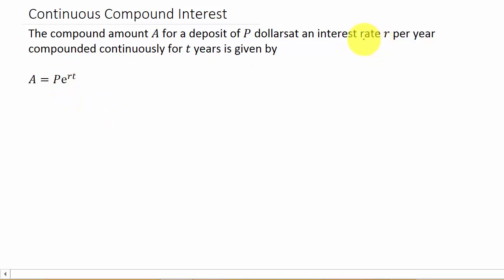R, that's your interest rate per year, and T is the number of years. Now, E is just a number. E is 2.71828182818, and it continues repeating like that.